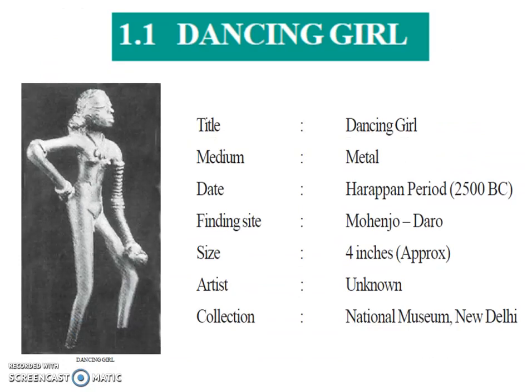Students, look at the picture of the Dancing Girl. Here are some points: title, medium, date, finding site, size, artist and collection. The title is Dancing Girl. Medium is metal. Date is Harappan period, 2500 BC. Finding site is Mohenjo-daro. Size is approximately 4 inches. Artist is unknown. Collection is National Museum, New Delhi.